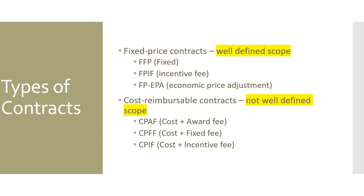There are different types of contracts. Fixed price contracts are used when you have a well-defined scope. Firm Fixed Price (FFP) is straightforward — a set price for the project. Fixed Price Incentive Fee (FPIF) adds an incentive if the project is completed within a certain percentage of time or cost. Fixed Price Economic Price Adjustment (FP-EPA) is used for longer projects — two to three years — where you adjust the price based on macroeconomic data like raw material or commodity prices.